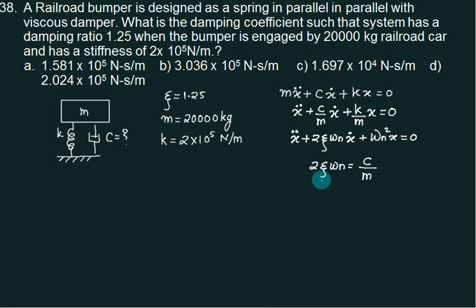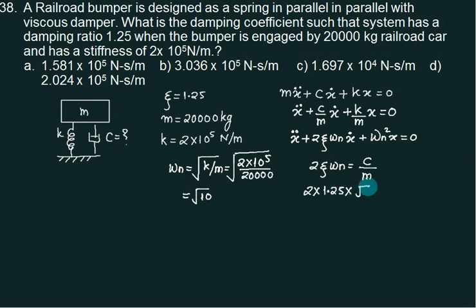Root of 2 into 10 to power 5 divided by 20,000 is root 10. So 2 into zeta is 1.25, omega N is root 10. We don't know C, but mass is 20,000. So what is value of C? The answer is approximately 79,000 N-s/m.